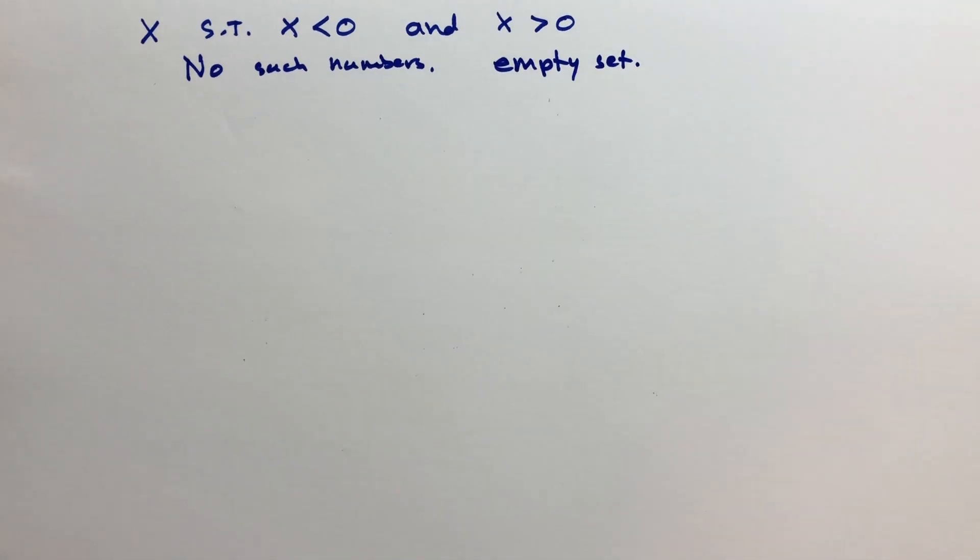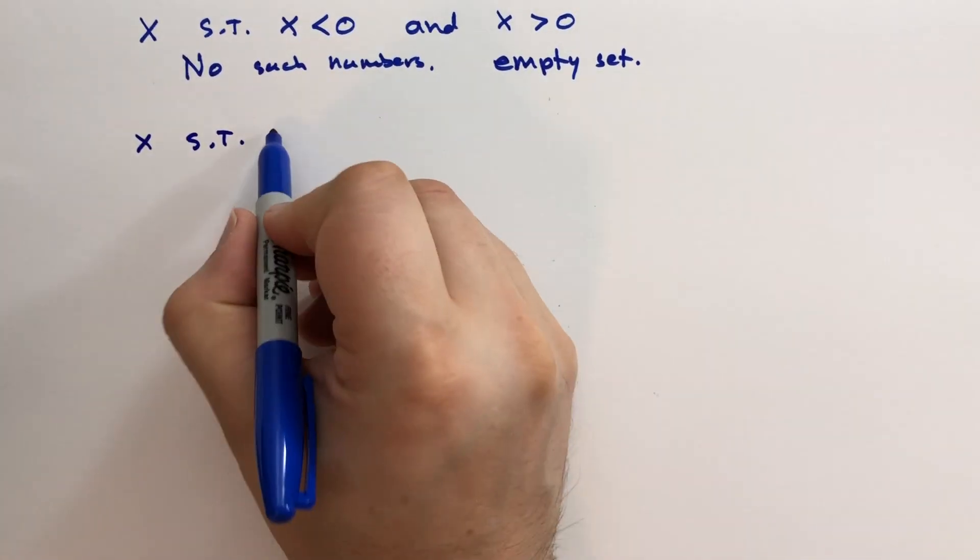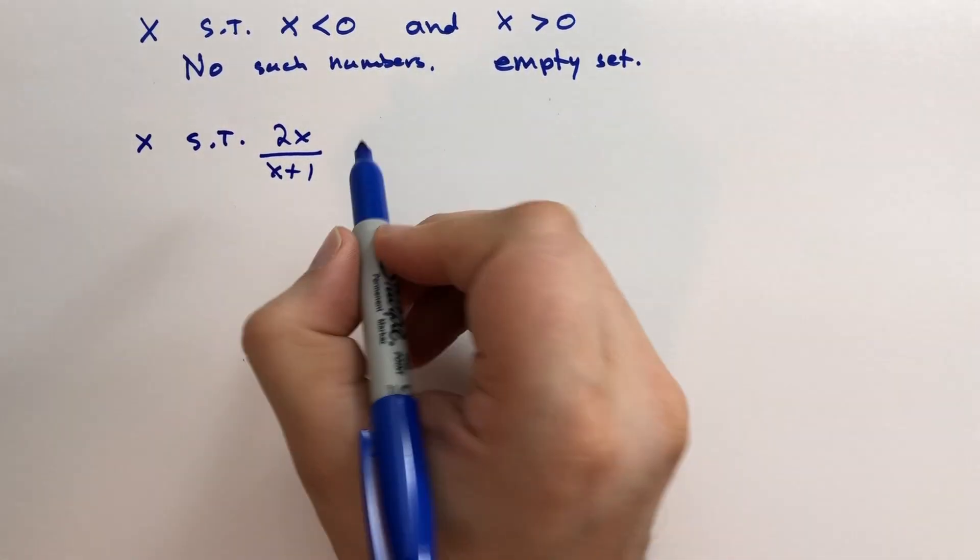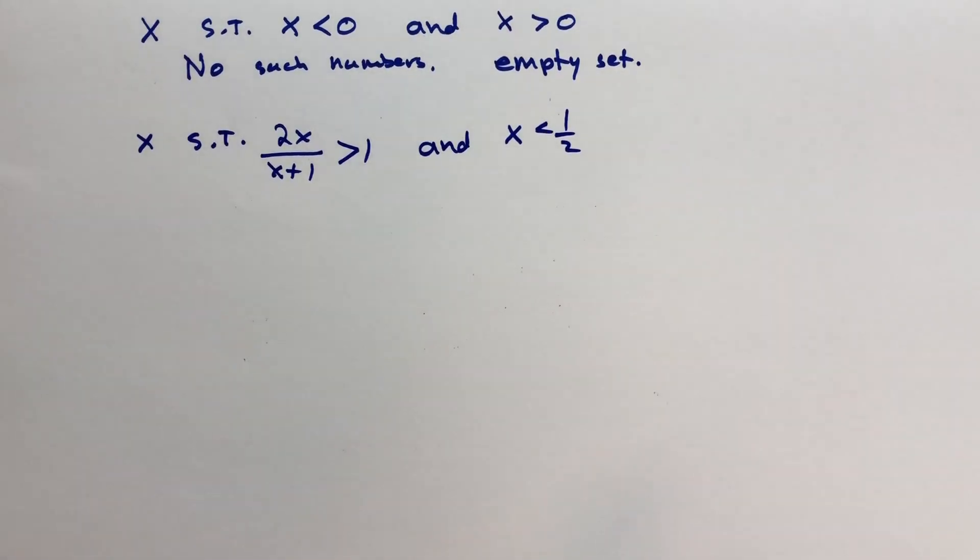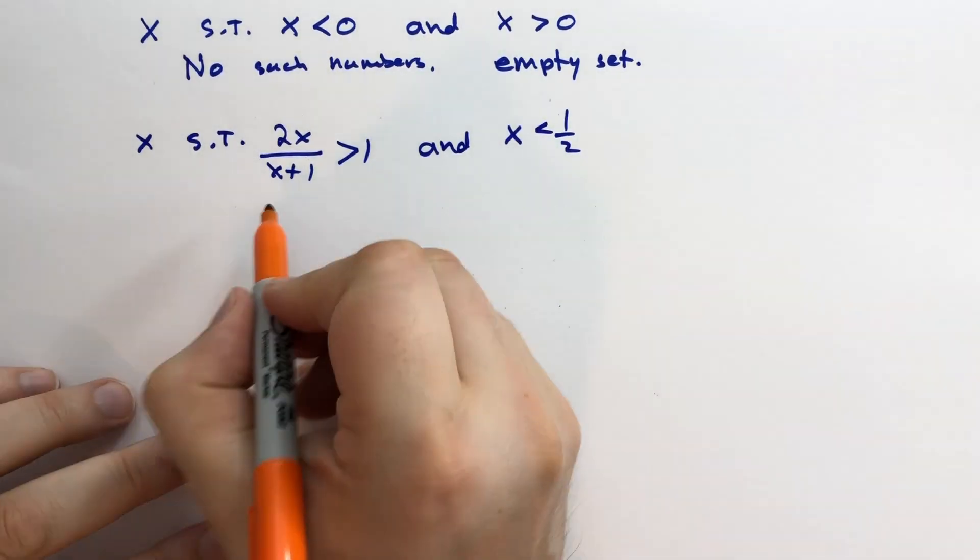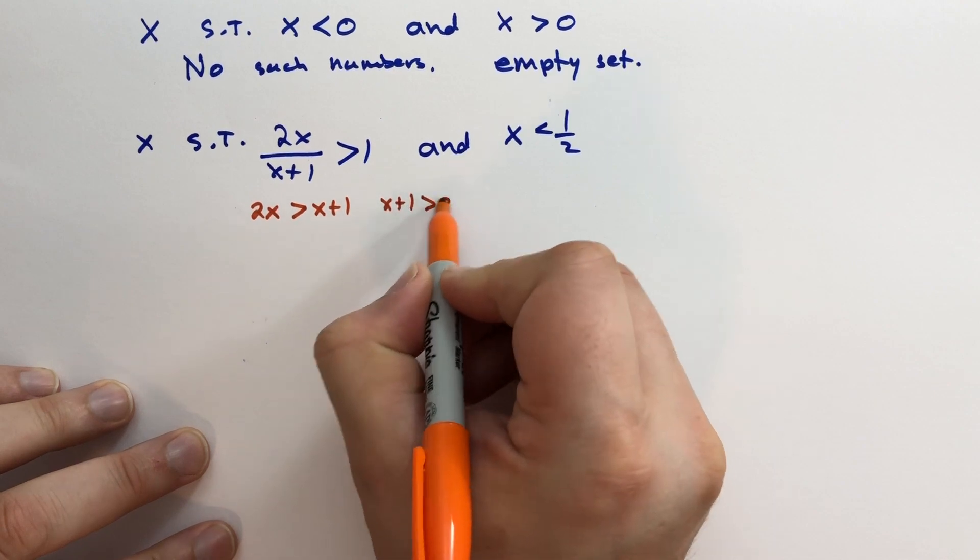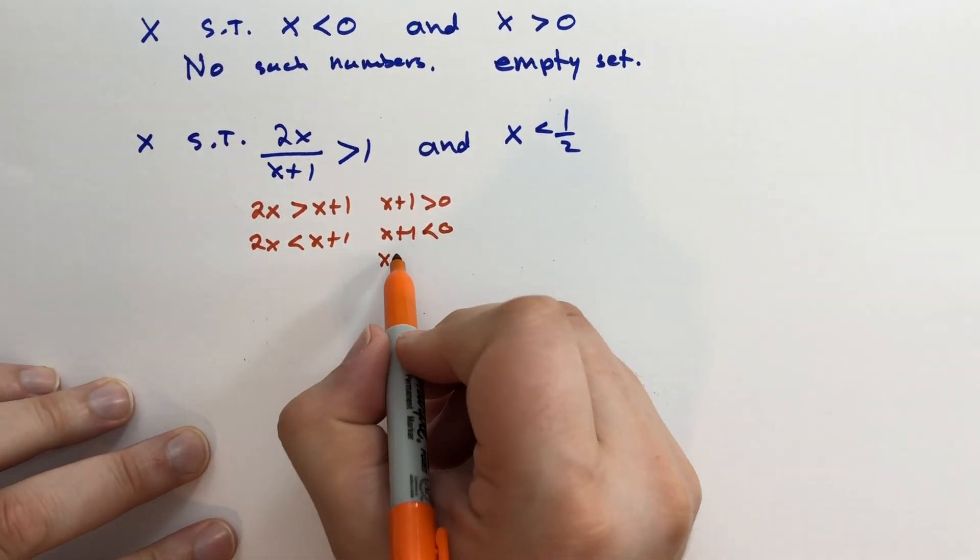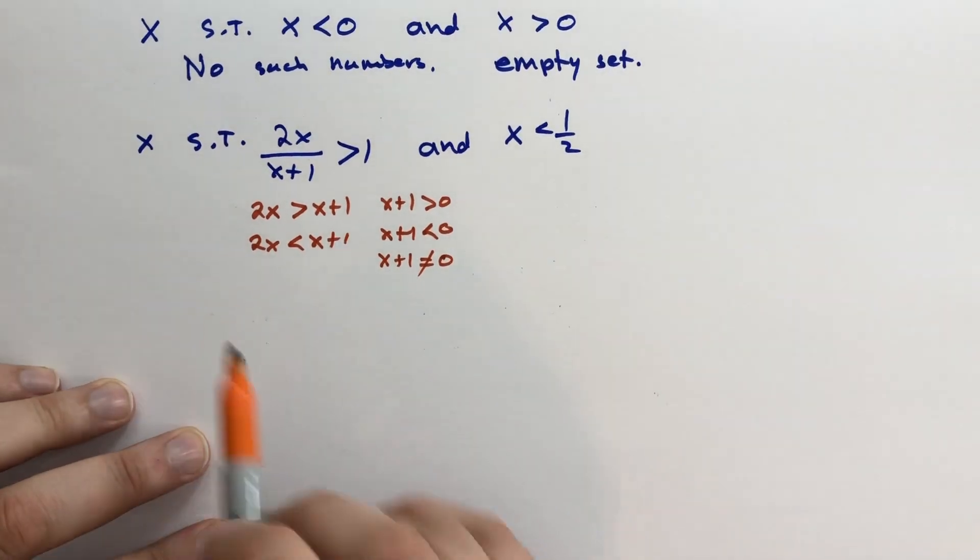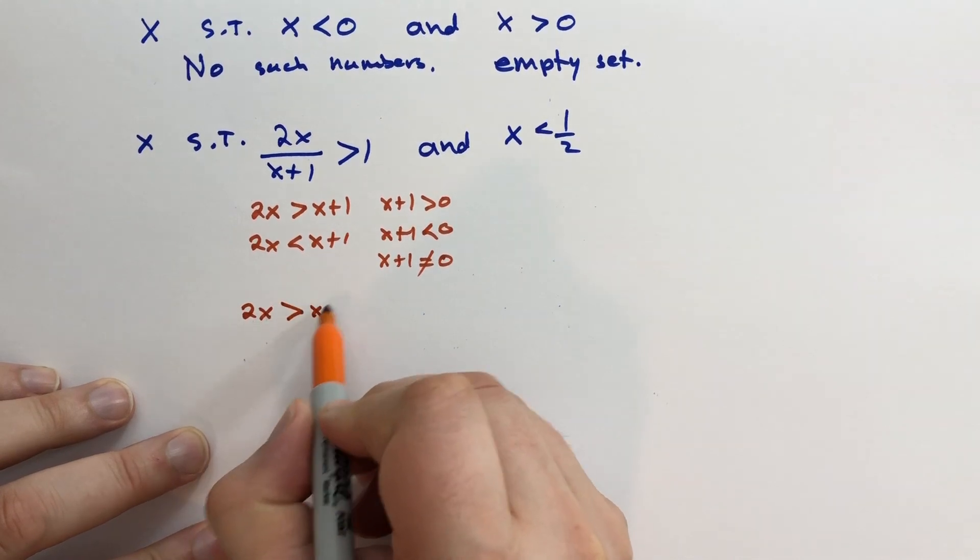Notice that we're not spending a lot of time, or any time at all, talking about notation. What about X such that 2X all over X plus 1 is greater than 1, and X is less than 1 half? Well, let's solve, or let's rewrite this. Let's use orange. So this would mean that 2X is greater than X plus 1 when X plus 1 is greater than 0, and 2X is less than X plus 1 when X plus 1 is less than 0.